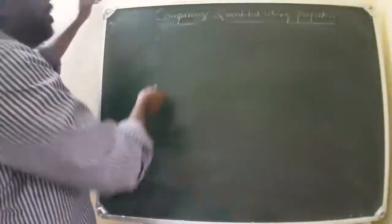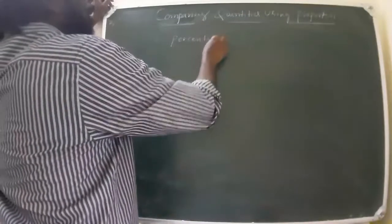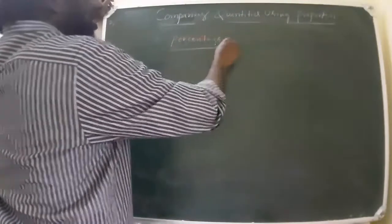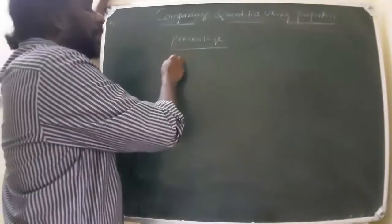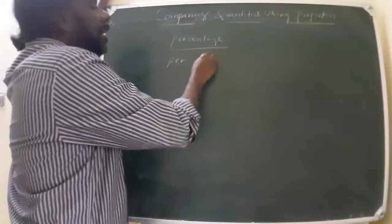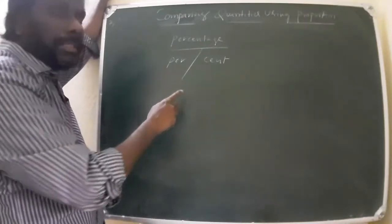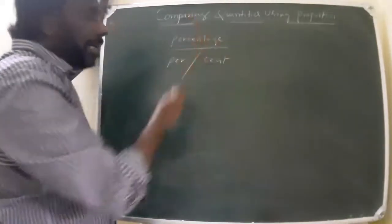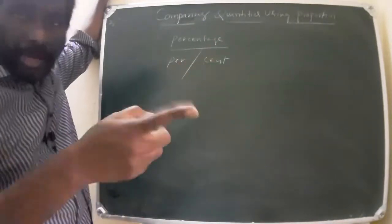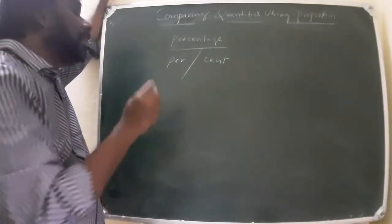Good morning students. What is meant by percentage? Percent — the definition is 'per cent.' One cent means one hundred, so per cent means per hundred, that is out of 100.